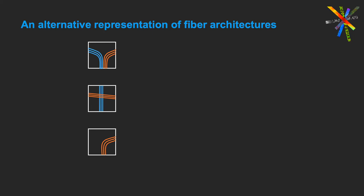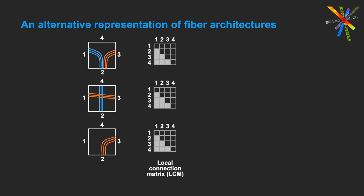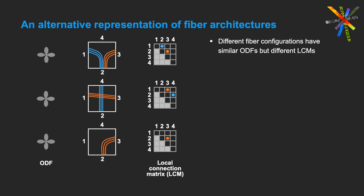Consider these three examples of fiber configurations in a voxel. Let's number the edges of the voxel 1, 2, 3, and 4. Now consider a 4x4 matrix that tells us if each pair of edges in this voxel are connected to each other. In the example on top, 1 is connected to 2 and 2 is connected to 3. In the middle, 1 is connected to 3 and 2 is connected to 4. And at the bottom, only 2 is connected to 3. We'll call this the local connection matrix or LCM of the voxel. These three fiber configurations have very similar ODFs but very different LCMs. And in fact, if we know the LCM of the voxel, the ambiguity is resolved.